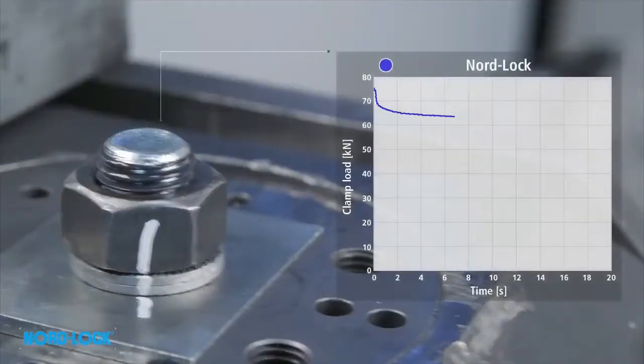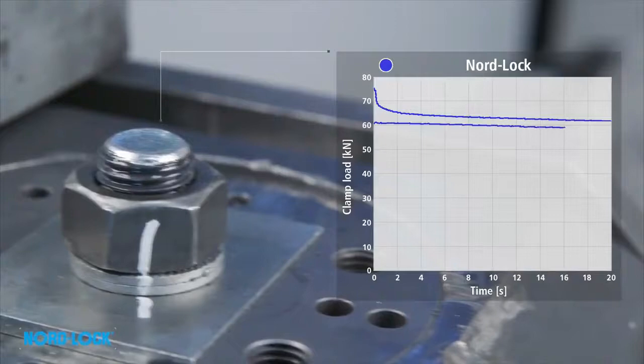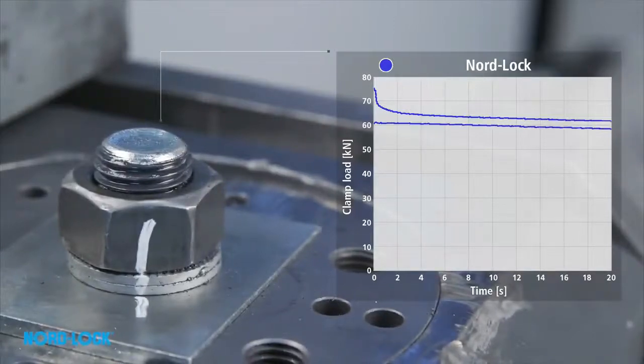After the initial settlements, a high and stable clamp load still remains. A second test continues to show that no unintentional rotation occurs. No retightening will be required.